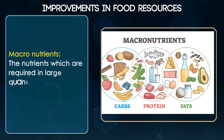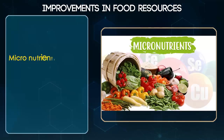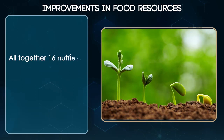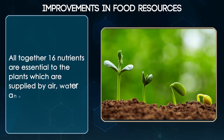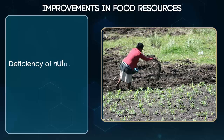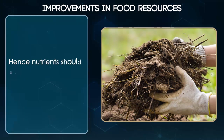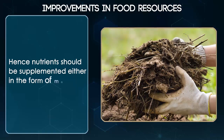Macronutrients are the nutrients which are required in large quantities. Micronutrients are the nutrients which are required in small quantities. Altogether 16 nutrients are essential to the plants, which are supplied by air, water and soil. Deficiency of nutrients affects the physiological processes in plants. Hence, nutrients should be supplemented either in the form of manures or fertilizers.